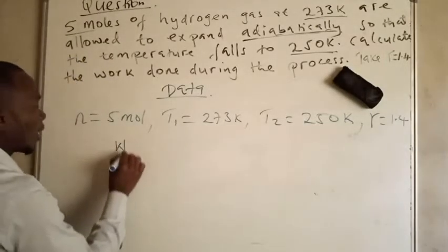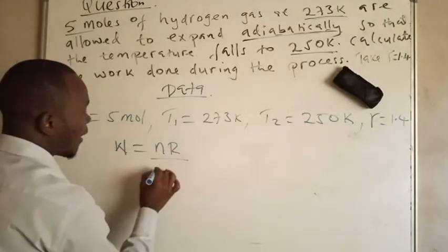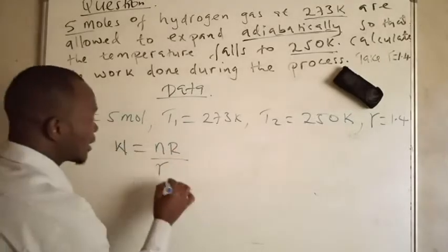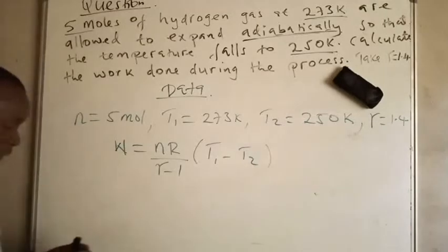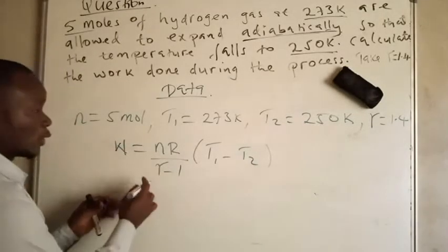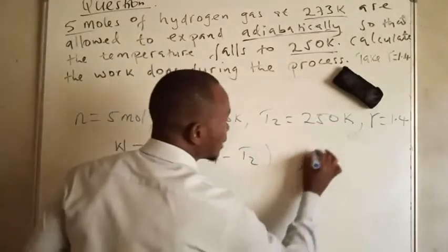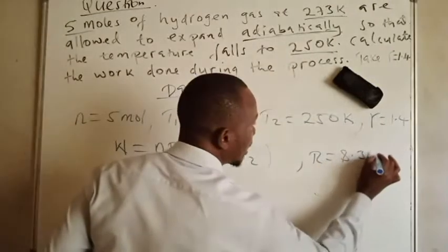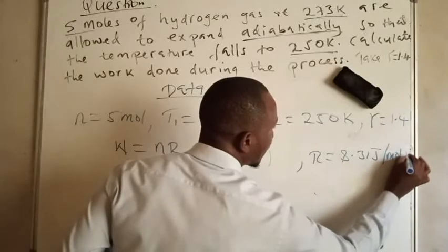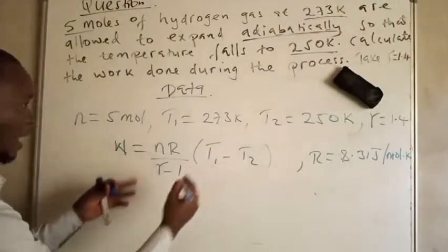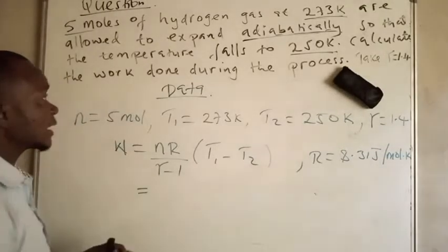The work done is given by the number of moles times R times the change in temperature, divided by gamma minus 1. Now, R is simply a constant and it is given by 8.31 joules per mole per Kelvin. So this is the value for the gas constant.